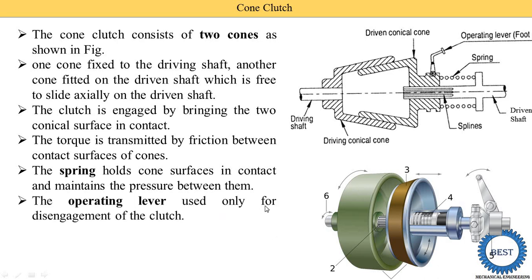The operating lever is used only for disengagement of the clutch. During normal condition, the clutch is engaged — both cone surfaces are engaged and power is transmitted from the driving shaft to the driven shaft in our bike or four-wheeler. When we are not pressing the foot lever, this operating lever is provided on the left side in our car. When the clutch is not pressed, the clutch is in engaged position and power is transmitted from the driving shaft to the driven shaft. When we want to change the gear, we need to disengage the driving shaft and the driven shaft.